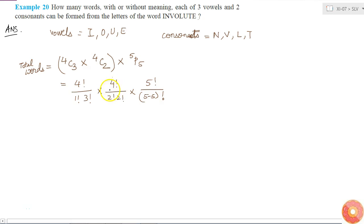The first one, 4 factorial by 3 factorial, is equal to 4. And this is 4 factorial by 2 factorial times 2 factorial, which is 2 times 2. This is 4 multiplied by 5 minus 5 factorial is 0 factorial which is 1, so this is equal to 5 factorial.